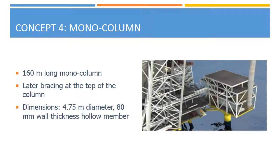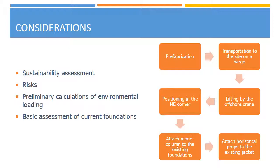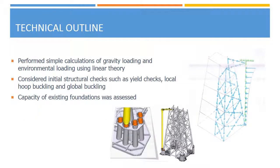Monocolumn concept. This proposal considers a monocolumn directly connected to the foundations, which will allow transferring gravity load straight to the ground. Lateral bracing will be connected to the top of the existing jacket to transfer environmental loading. This concept addresses the issue of limited space on the existing platform. While looking into possible options, risks were assessed. The main ones included possible collision of the unit with the existing structure during installation, failure of foundations, and exceedance of the budget.